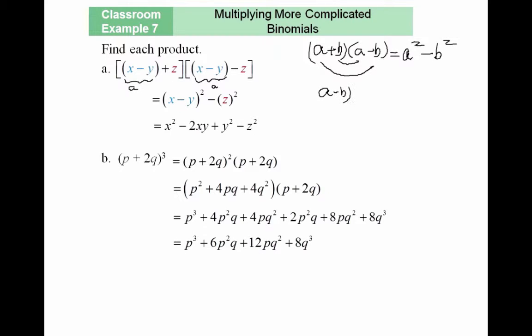For a minus b squared: first term squared, minus 2ab as the middle term, plus the second term squared. If you write a minus b times a minus b and multiply term by term, you see you get ab plus ab, which adds up to 2ab — but it's minus because the sign here is minus.